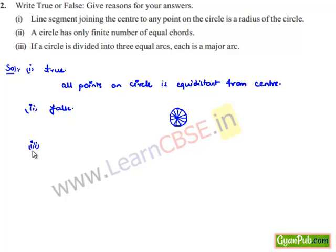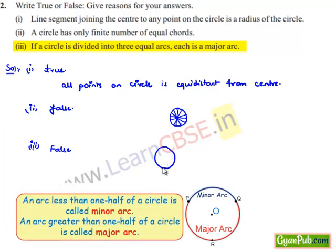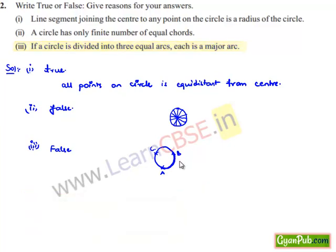Moving on to the third bit: if a circle is divided into three equal arcs, each is a major arc — that is false. Because if the circle is divided into three equal arcs AB, BC, and CA, and we consider arc AB, then the other arc BCA would be the major arc. But AB, BC, and CA individually cannot each be the major arc.